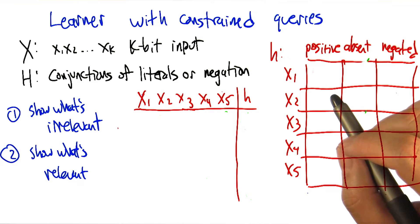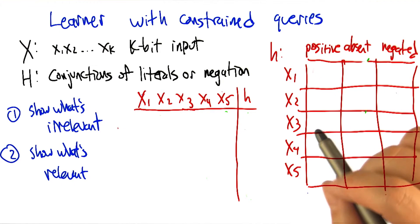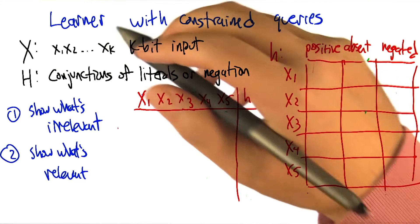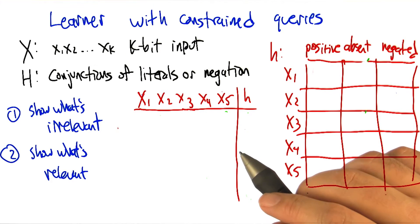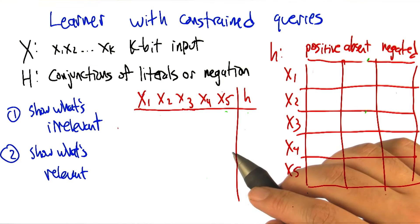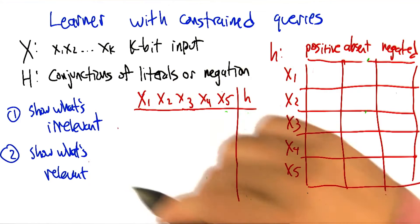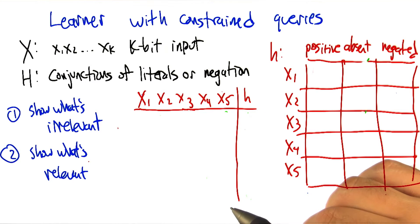All right, so you asked, unfortunately, what happens when the learner is now a part of this? Now the learner doesn't have that advantage that the teacher had of knowing what the actual answer was, and therefore being able to show specifically what's irrelevant and show what's relevant.